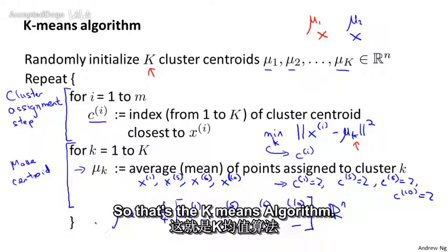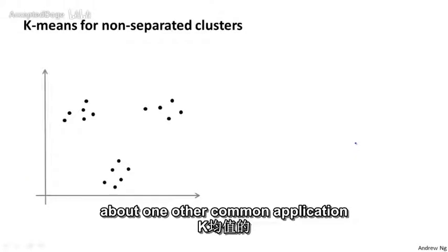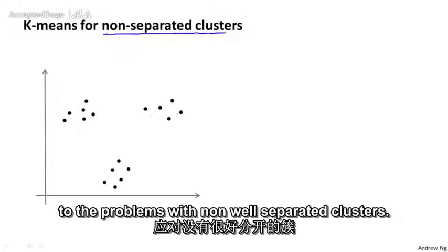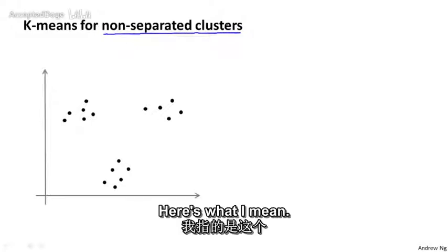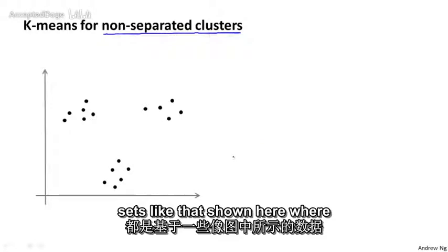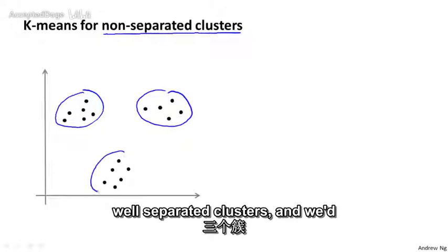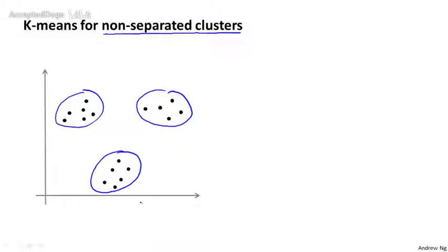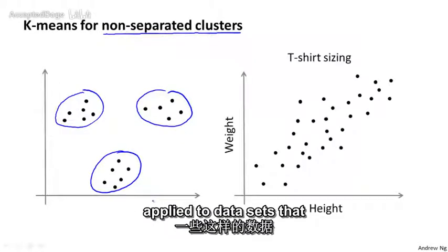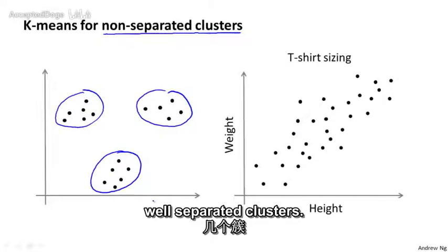That's the k-means algorithm. Before wrapping up, I want to mention one other common application of k-means: problems with non-well-separated clusters. So far we've been picturing k-means applied to datasets with pretty well-separated clusters, and we'd like an algorithm to find maybe three clusters. But very often k-means is also applied to datasets where there may not be several very well-separated clusters.